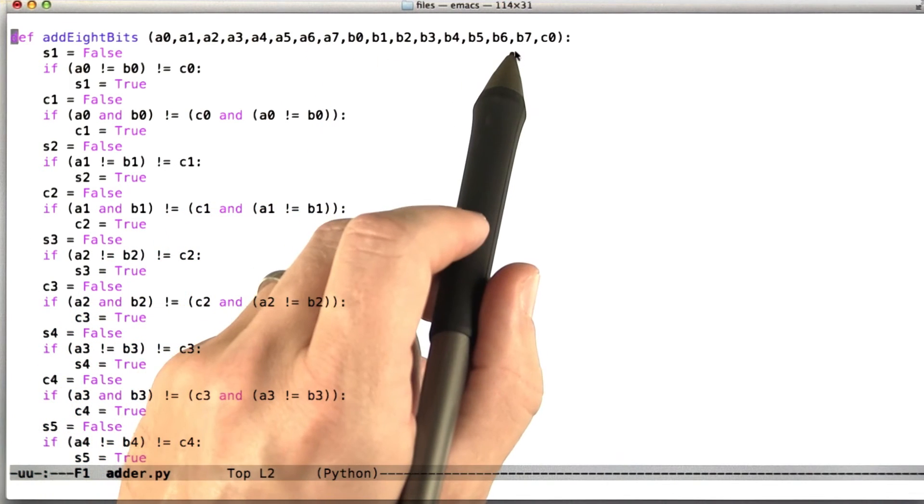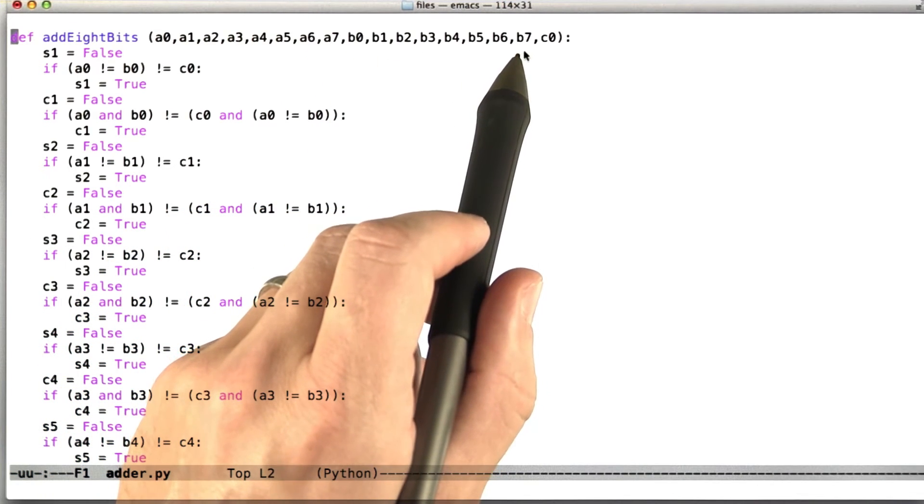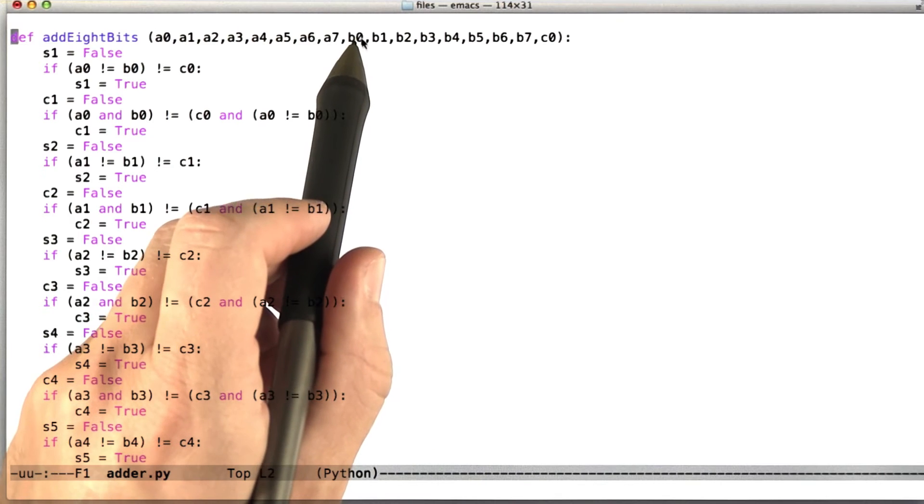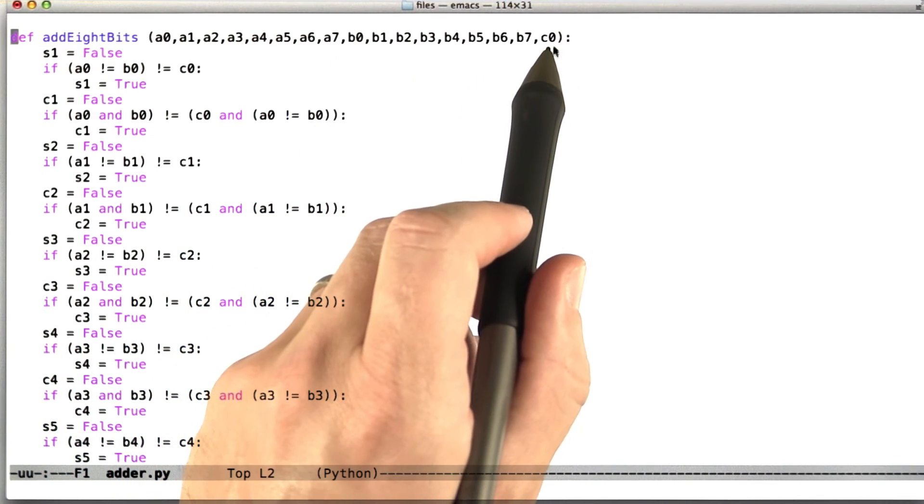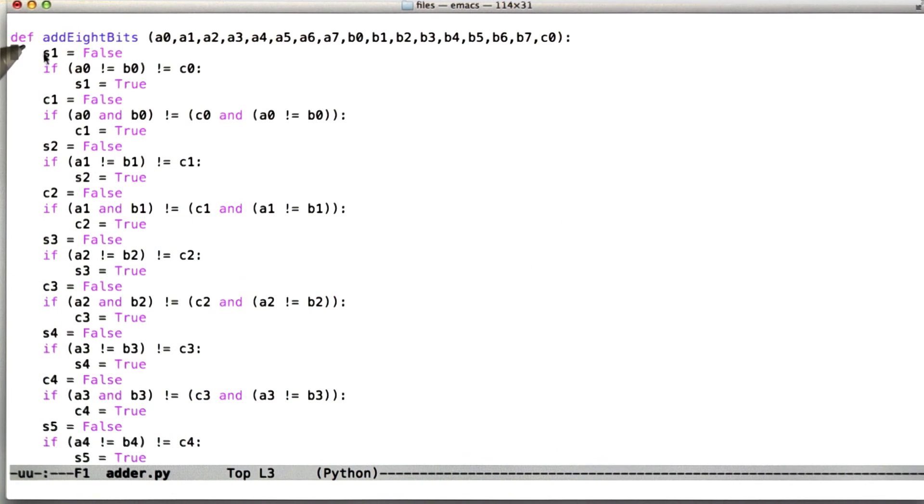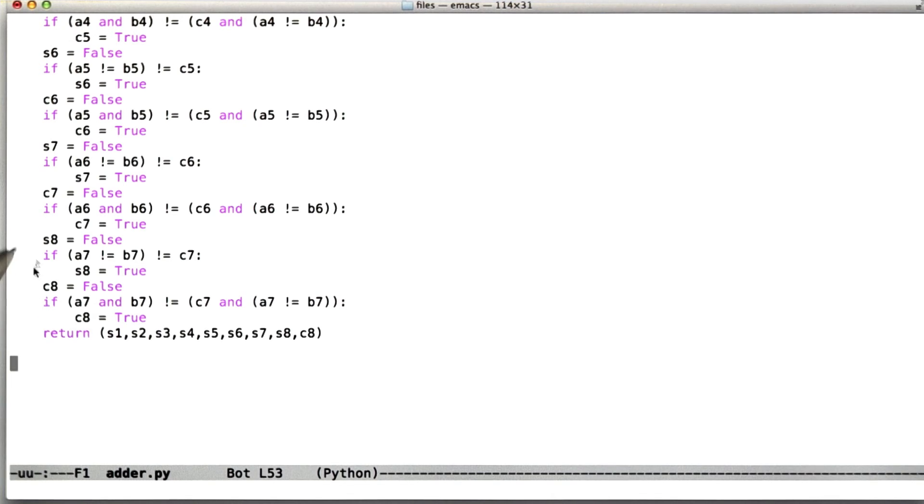Then B0 through B7 indicate the bits of the second input, where again B0 is the lowest order bit of B and B7 is the highest. And it takes an initial carry in bit. The chain of logic here is a cascading series of full adders for the individual bits. And as you can see, it's a little bit long.